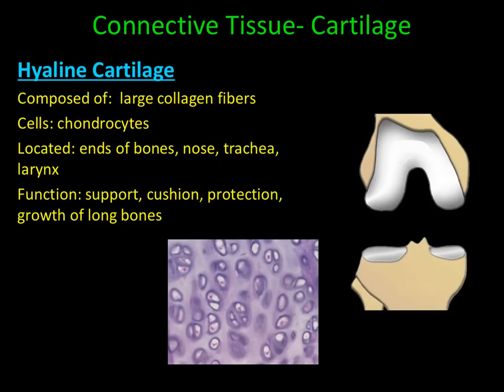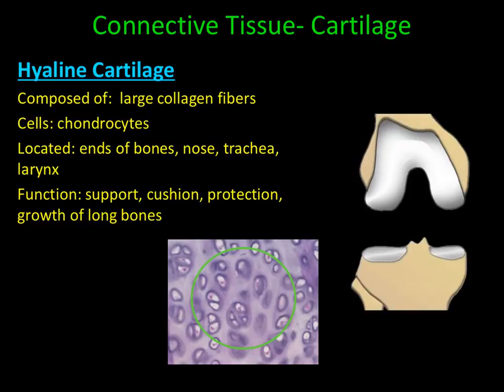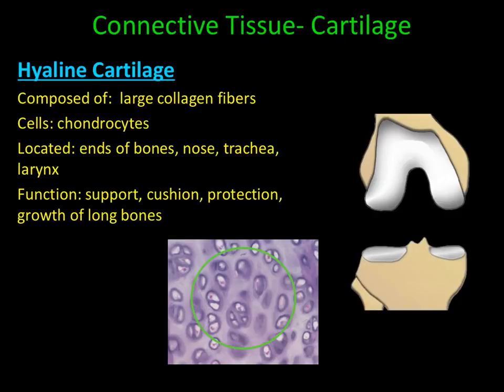The first type of cartilage is called hyaline cartilage. Hyaline cartilage is very durable, tough, and strong, with a glossy white smooth surface. It can be found at the ends of bones within joints, and it can also be found in the nose, the trachea, and larynx.